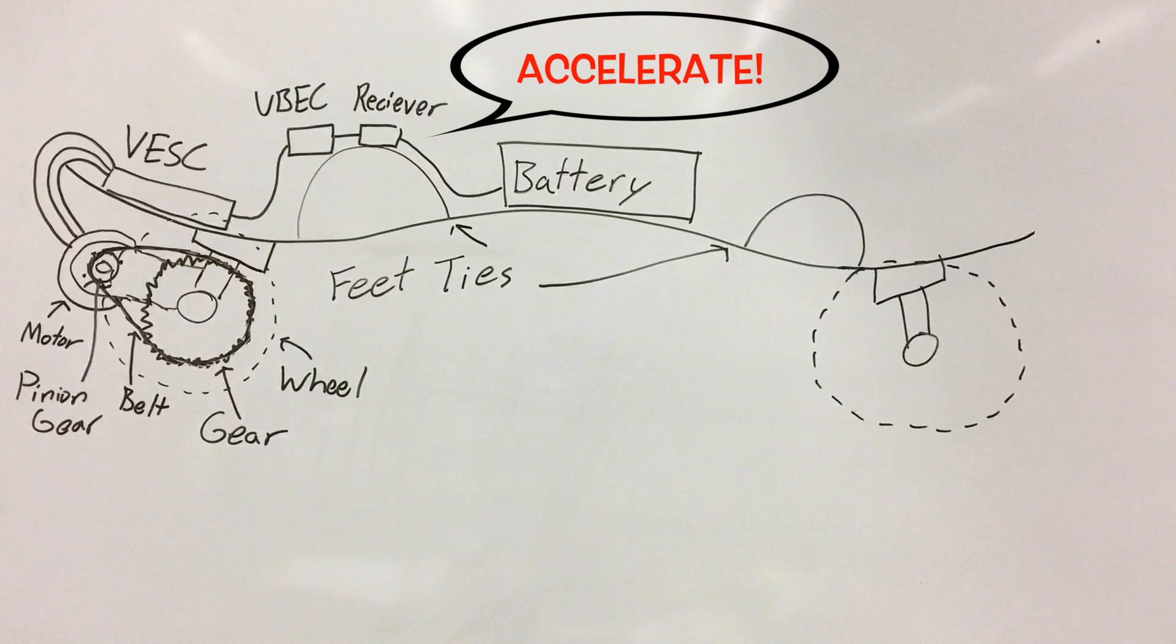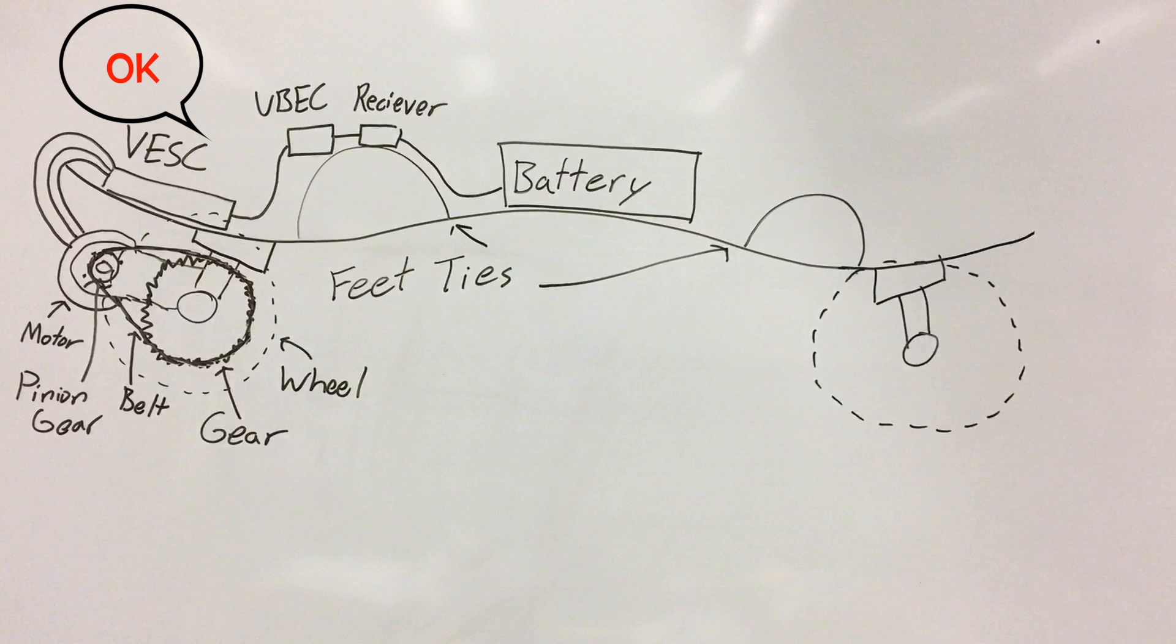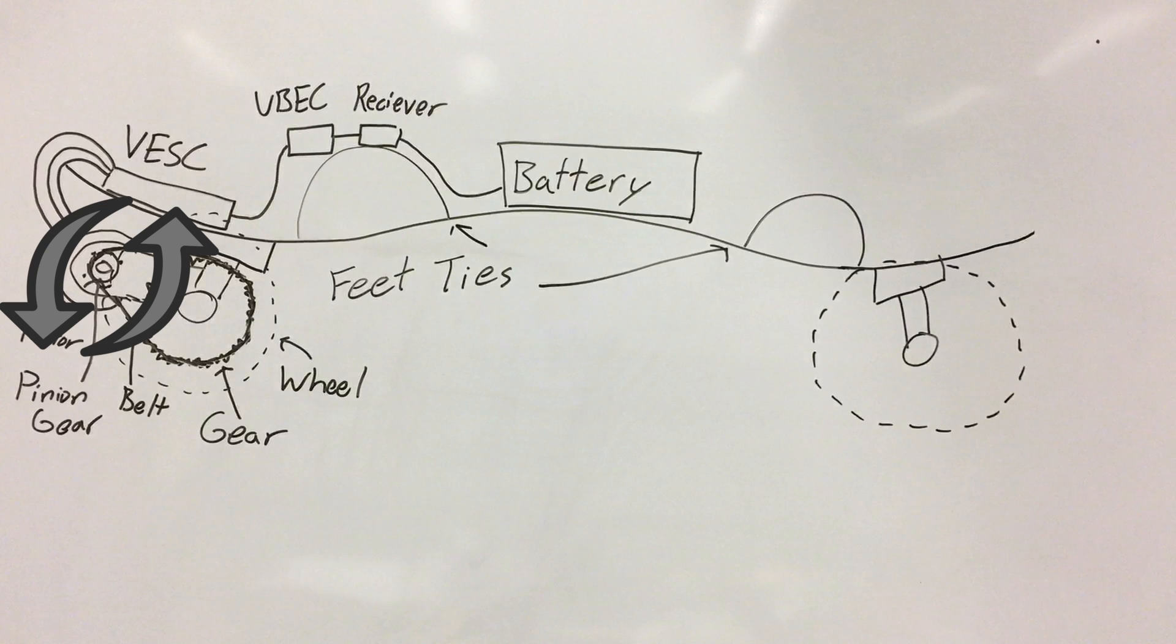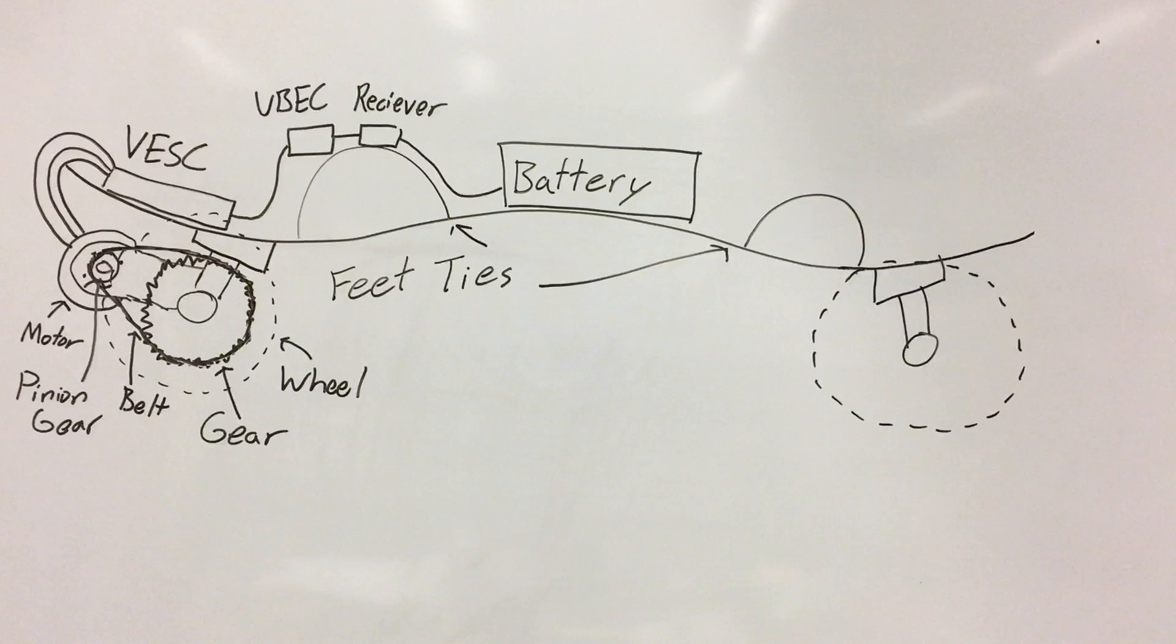to either accelerate, decelerate, or control the VESC into whatever set speed you want so that the motor can spin at the right speed. And after all that happens it's connected to the battery. So the battery, as you might expect,